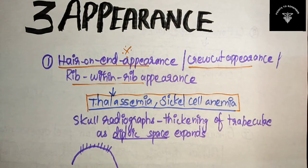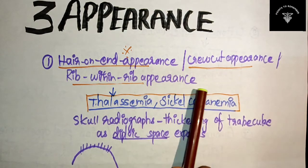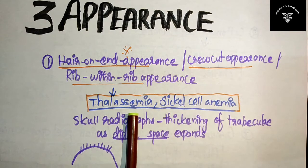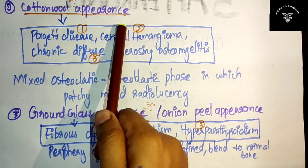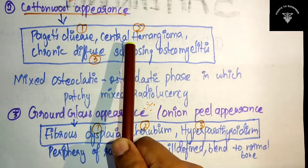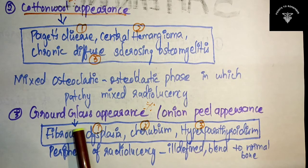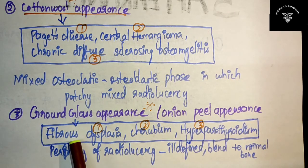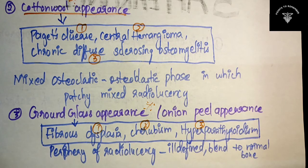To summarize: the three important appearances for your exam are — first, hair on end appearance, otherwise known as crew cut appearance or rib within a rib appearance, seen in thalassemia and sickle cell anemia; second, cotton wool appearance, seen in Paget's disease, central hemangioma, or chronic diffuse sclerosing osteomyelitis; and third, ground glass appearance, seen in fibrous dysplasia, cherubism, and hyperparathyroidism. These are repeatedly asked in exams.